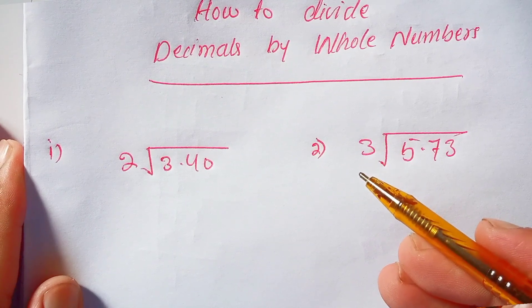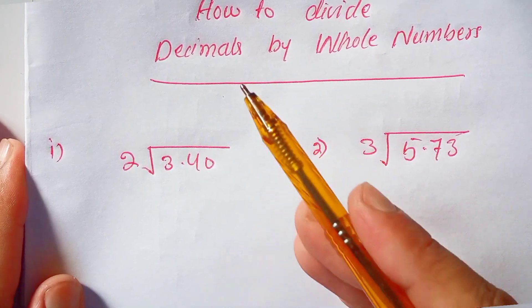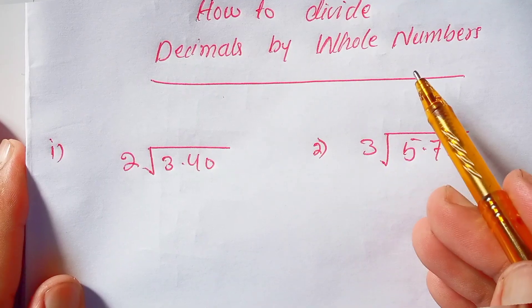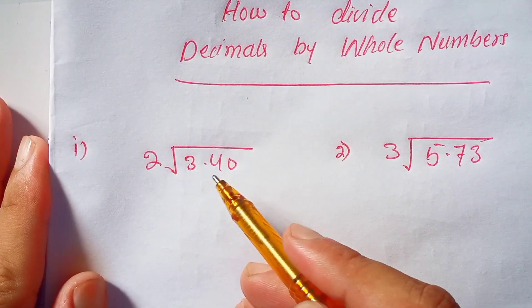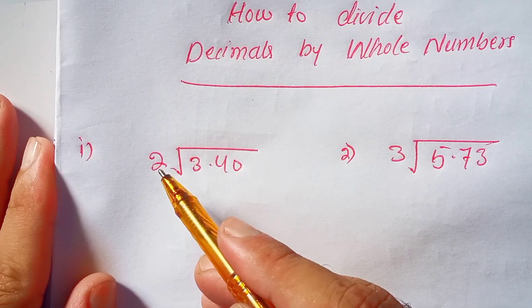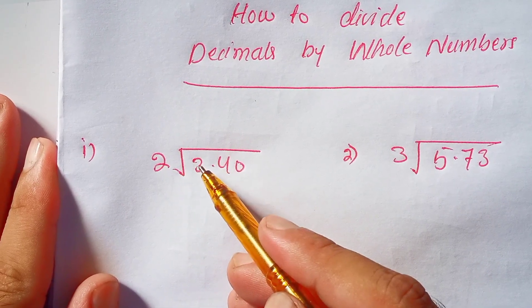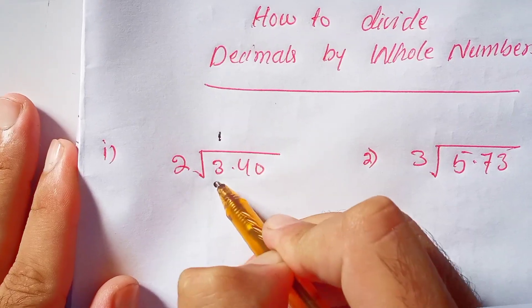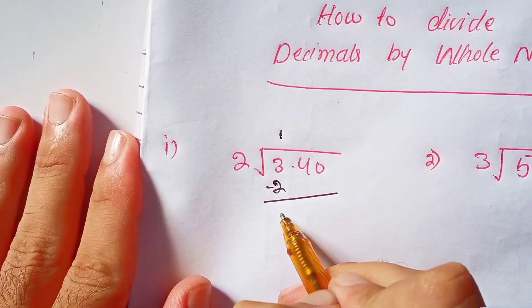Hi guys, welcome to Soy Math Academy. In today's lesson we are going to focus on how to divide decimals by whole numbers. For example, 3.40 divided by 2. How many times does 2 go into 3? 2 times 1 is 2. Subtract 2 from 3, the remainder is 1.